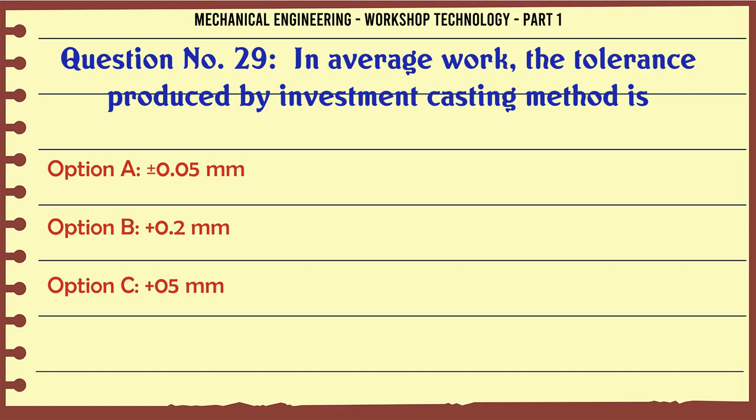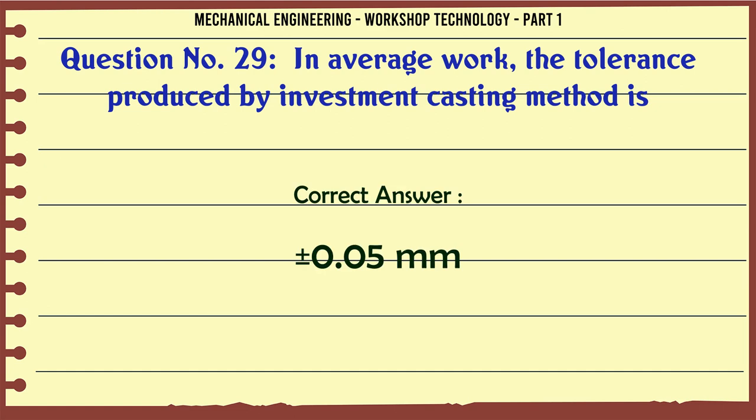In average work, the tolerance produced by the investment casting method is: A. 0.05 mm. B. 0.2 mm. C. 0.5 mm. D. 1 mm. The correct answer is: 0.05 mm.